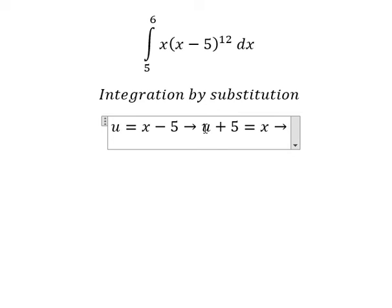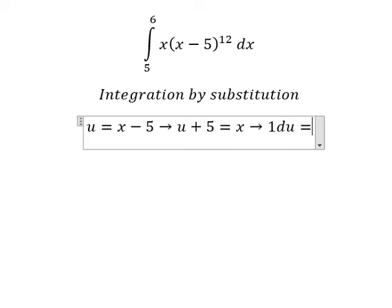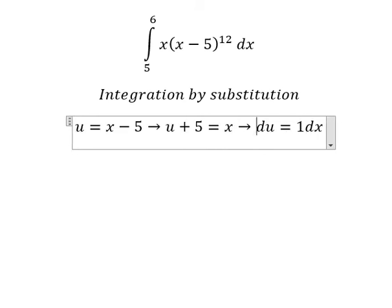Next, we need to take the derivative of both sides. The derivative of u is 1. This constant becomes 0. The derivative of x is 1. So du equals dx, and we can simplify this way.